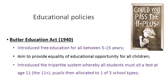Between 1880 and 1940 there were some small increments by which the age of compulsory attendance was increased. The next big milestone was in 1944 with the Butler Education Act. This introduced free education for all between five and fifteen years. It aimed to provide equality of educational opportunity for all children, with the hope that all elementary schools would be teaching similar material and that teachers would be of similar ability.